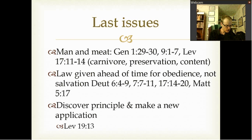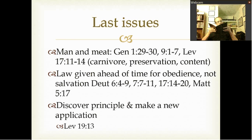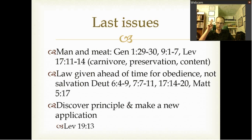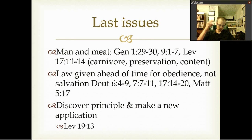Deuteronomy 17:14-20 says: 'When you enter the land which the Lord your God gives you, and you possess it and live in it, and you say I will set a king over me like all the nations around me, you shall surely set a king over you whom the Lord your God chooses, one from among your countrymen.' First, God knew they were going to eventually reject him. Second, God wanted to be the one who decides who is king. And a lot of the things mentioned here are exactly what Solomon did — you weren't supposed to get horses from Egypt, accumulate many wives, or make silver or gold too common.